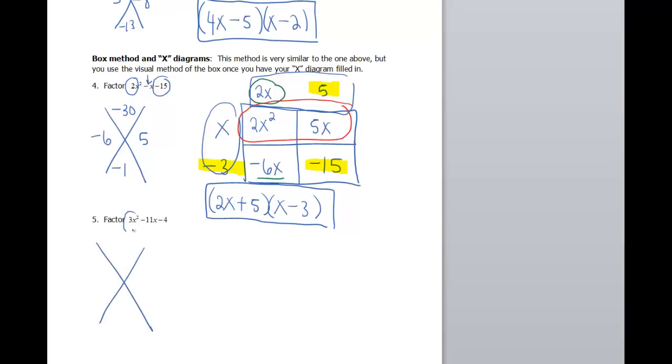Let's set up my X. I've got a 3 and a negative 4. Multiply those together, that gives me a negative 12. My number at the bottom is negative 11, because that's my middle term. Two numbers that multiply to negative 12 and add to negative 11 are a negative 12 and a positive 1. Setting up my box. If the box doesn't float your boat, use the method we were using up above. Hopefully one of the two makes sense to you.